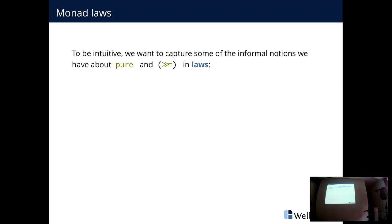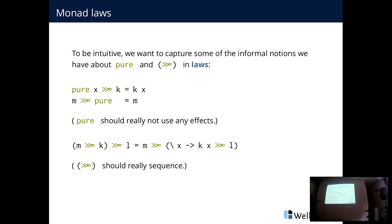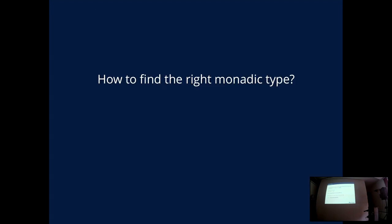In general, we expect monads to satisfy the monadic laws. The idea is simple: the left and right identity laws express that `pure` should really not use any effects, and associativity of bind expresses that bind really does sequence computations in the way we'd expect. These laws capture the intuition we'd naturally assume if we think about monads as capturing certain effects.